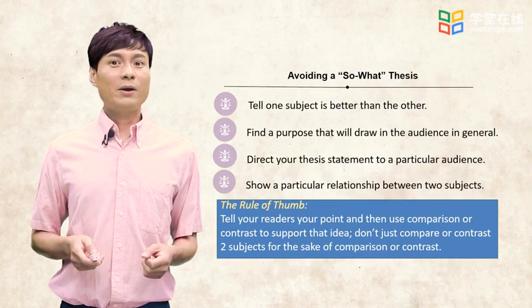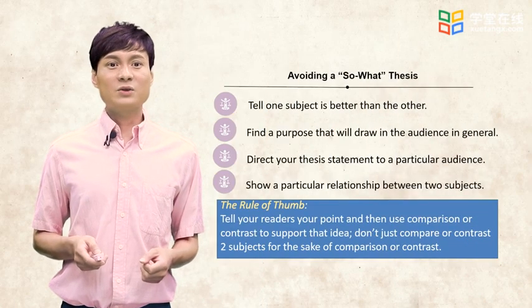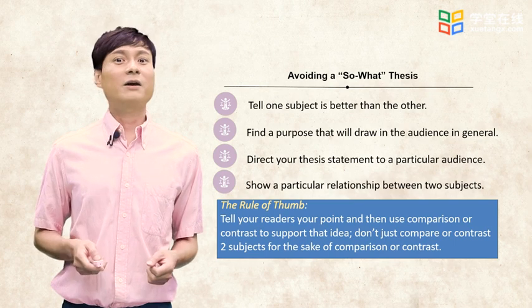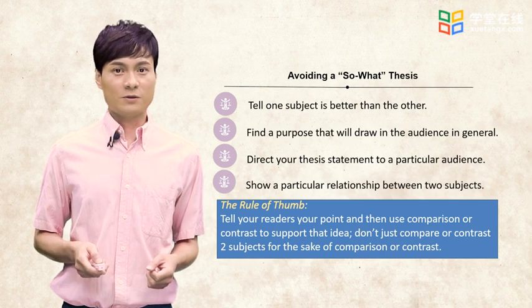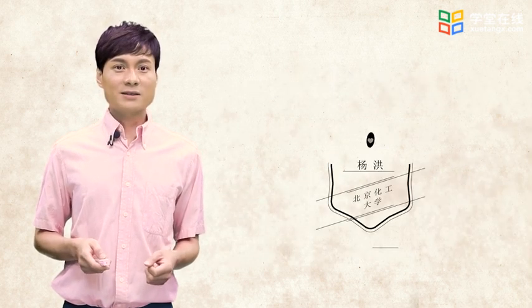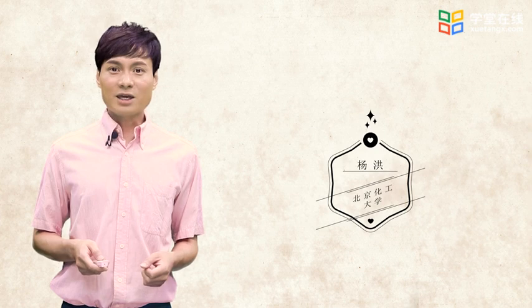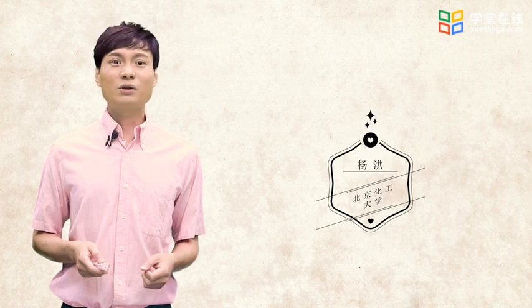During this lesson, we've talked about a few ways to avoid a so-what thesis statement: we can tell one subject is better than the other, find a purpose that will draw in the audience in general, direct the thesis statement to a particular audience, or show a particular relationship between two subjects. The golden rule is to tell readers the major point and then use comparison or contrast to support the idea — don't just compare or contrast two subjects for the sake of comparison or contrast. That's all for this lesson. Thank you, and I look forward to seeing you again.